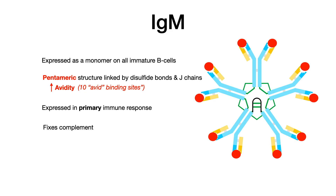Let's start with IgM. IgM is the most important in terms of its structure — you can see the image on the right-hand side of this slide. IgM is pentameric, meaning that it has 10 antigen binding sites. Because of this, it is said to have high avidity. Don't get the term avidity confused with affinity. Avidity means it has an excessive amount of binding sites — IgM has 10, so it has high avidity.